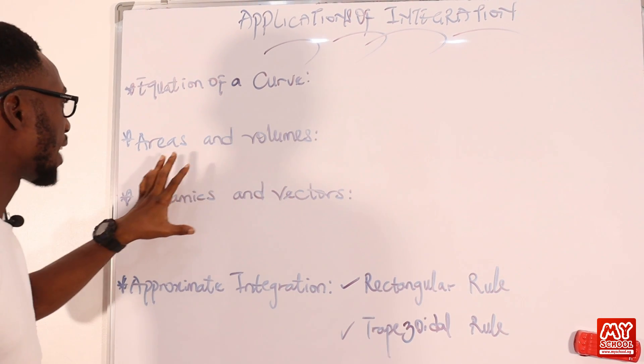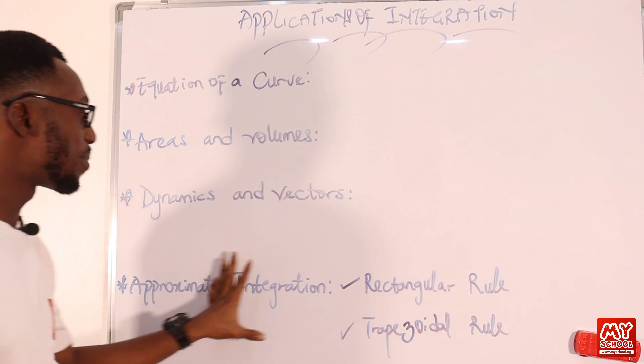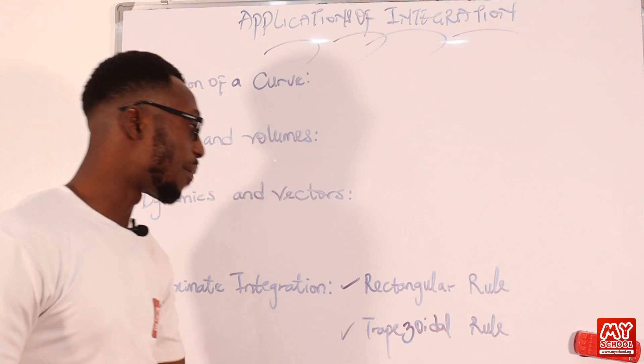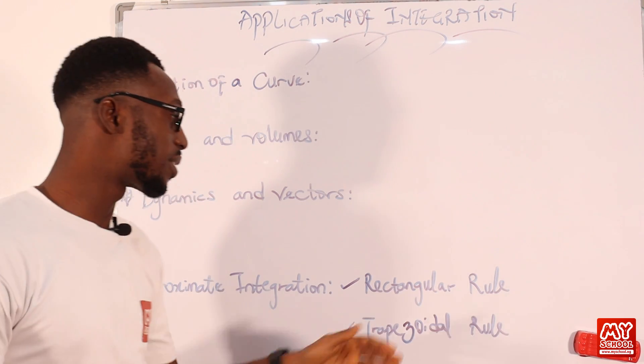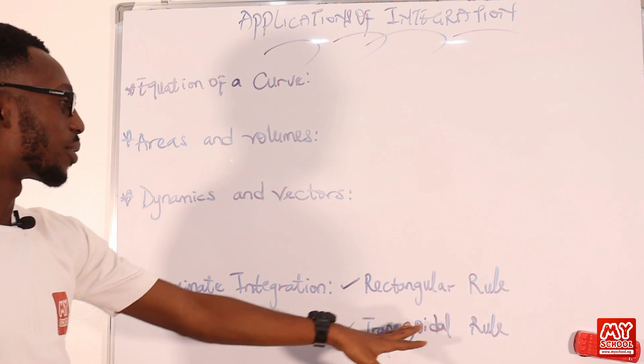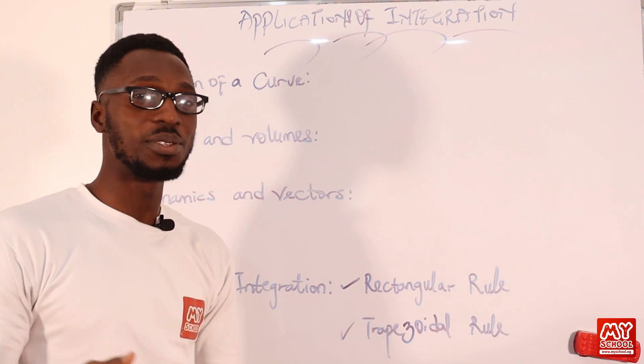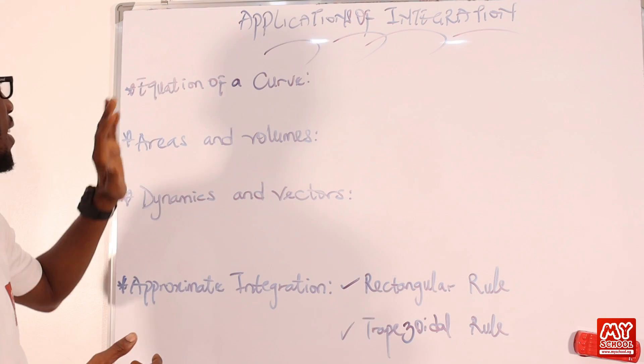Then we have areas and volumes, dynamics and vectors. We have approximate integration: rectangular, trapezoidal, and of course Simpson's rule. This is trapezoidal, you can also call it the trapezium rule. So let's make this happen.